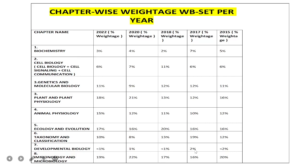In developmental biology, just less than 1% of questions were asked in 2022. This has been a trend of the WB SET: unlike other examinations related to PhD — like CSIR NET — the portion from developmental biology is very low. The major portion asked in the 2022 edition of WB SET was immunology and microbiology, from which around 19% of the questions were asked.